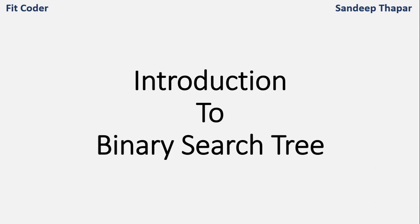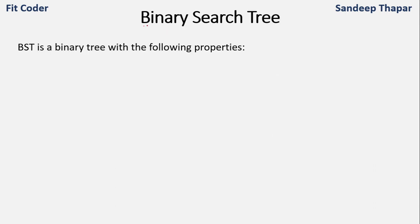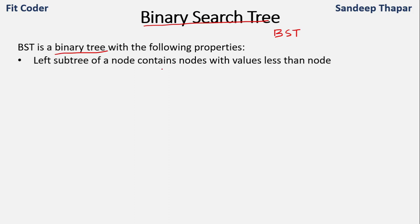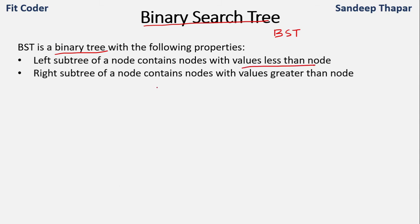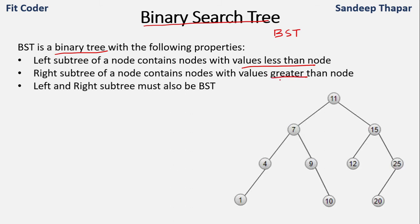So BST, which is a short form for binary search tree, is a binary tree with the following properties: the left subtree of a node contains nodes which have values less than the node, and the right subtree contains nodes which have values greater than the node. And the left and right subtree must also be a BST. This is an example of a binary search tree.